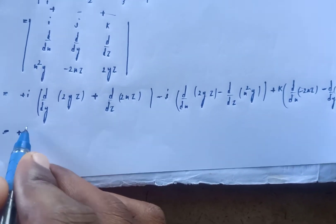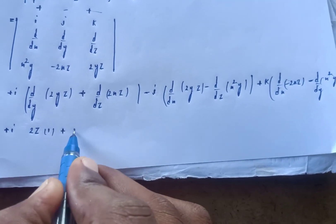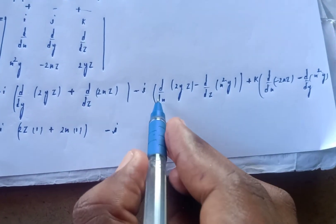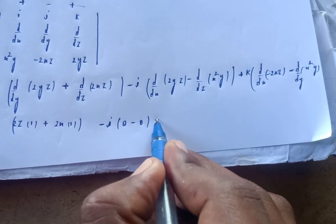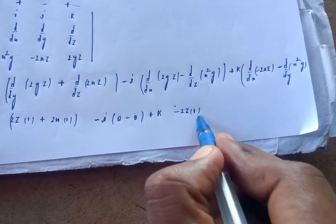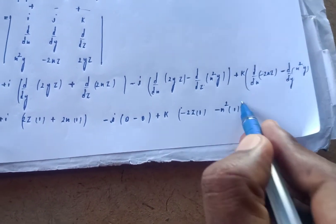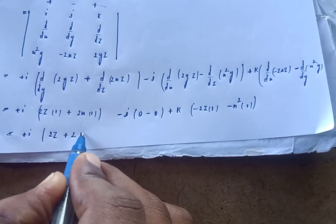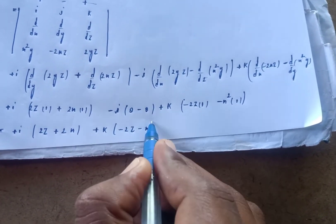Evaluating each term: the i component gives 2z times d/dy of y = 1, and 2x times d/dz of z = 1, so i of (2z plus 2x). The j component terms with respect to z and y go to 0. The k component gives minus 2z times d/dx of x = 1, minus x squared times d/dy of y = 1, so k of (minus 2z minus x squared).